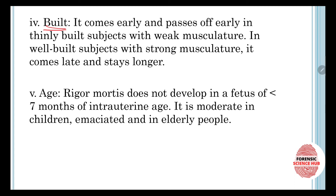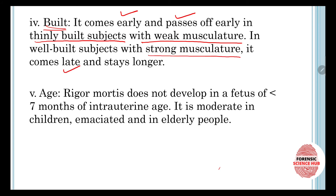Another factor is the build of the person. Rigor mortis is going to come early and pass off early in thinly built subjects with weak musculature. If the person is thin and lean, rigor mortis comes early and passes off early. Whereas in people who have strong musculature, it comes late and stays for a longer time period.